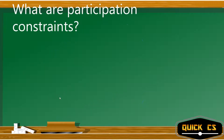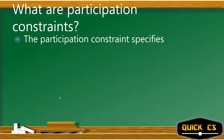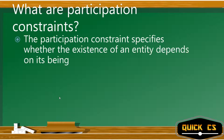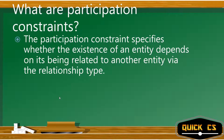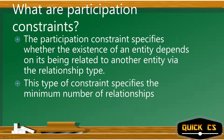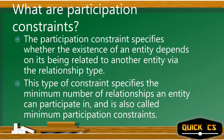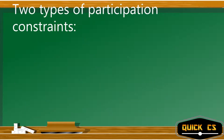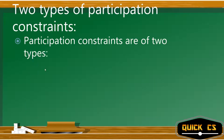What are participation constraints? The participation constraint specifies whether the existence of an entity depends on its being related to another entity via that relationship type. This type of constraint specifies the minimum number of relationships an entity can participate in, and is also called the minimum participation constraint.